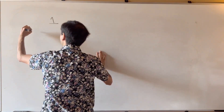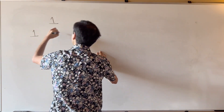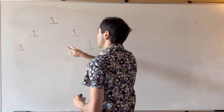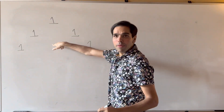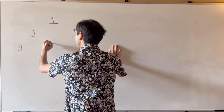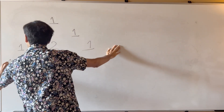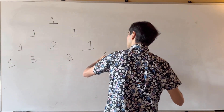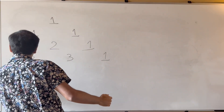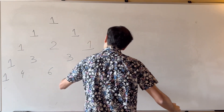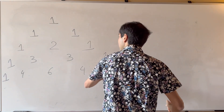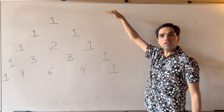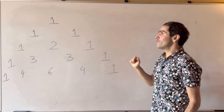Consider Pascal's triangle. The branches are one, one, and each entry is the sum of its parents. So the rows go: 1,1 then 1,2,1 then 1,3,3,1 then 1,4,6,4,1, and so on. This time, we want to consider the product of every row.